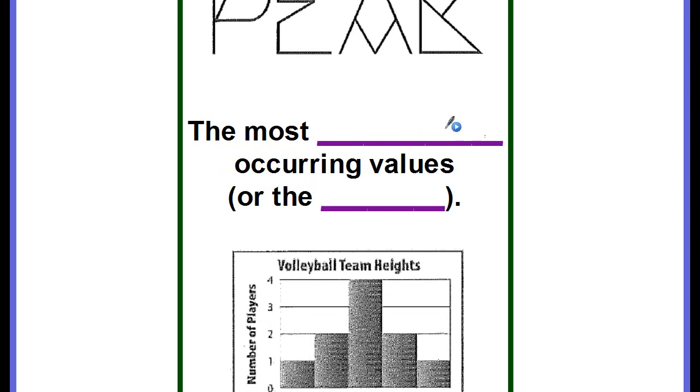Then we have peaks. Peaks are the most frequently occurring values or the mode. Looking at this histogram, which one occurs the most? Well, it's going to be the bar that's the tallest, which happens to be the 64 to 65 range. The tallest would be the peak. So this graph peaks at 64 to 65.